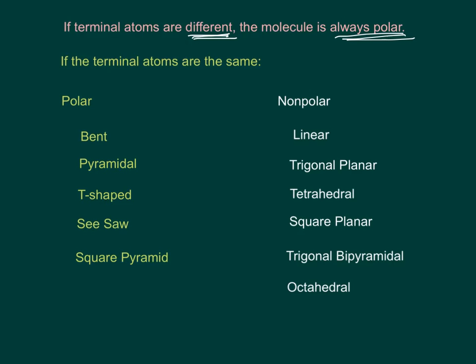So the trick is, what if all of the terminal atoms are the same? Well, it's polar if it's bent, pyramidal, T-shaped, seesaw, or square pyramid.